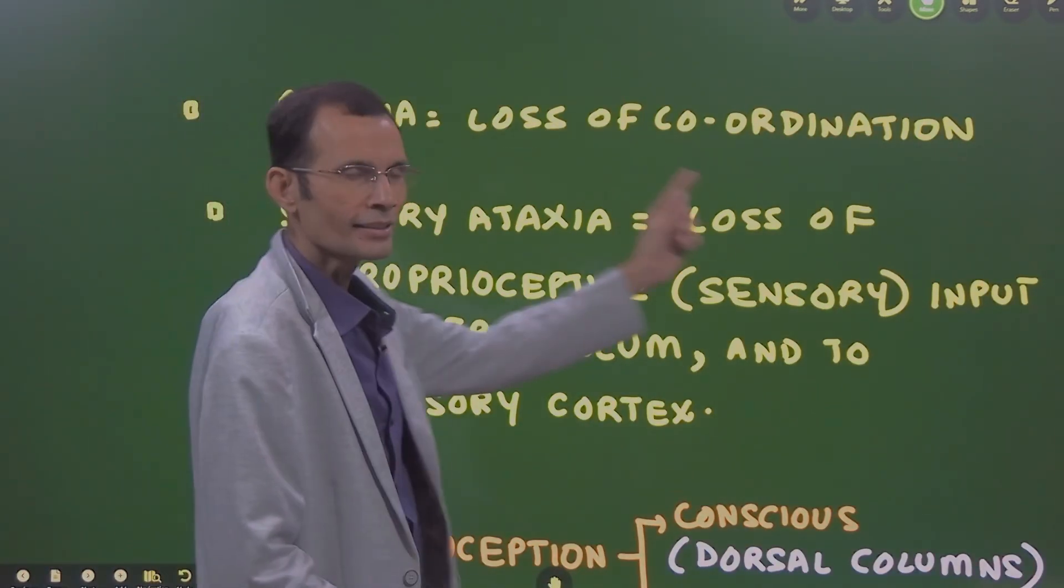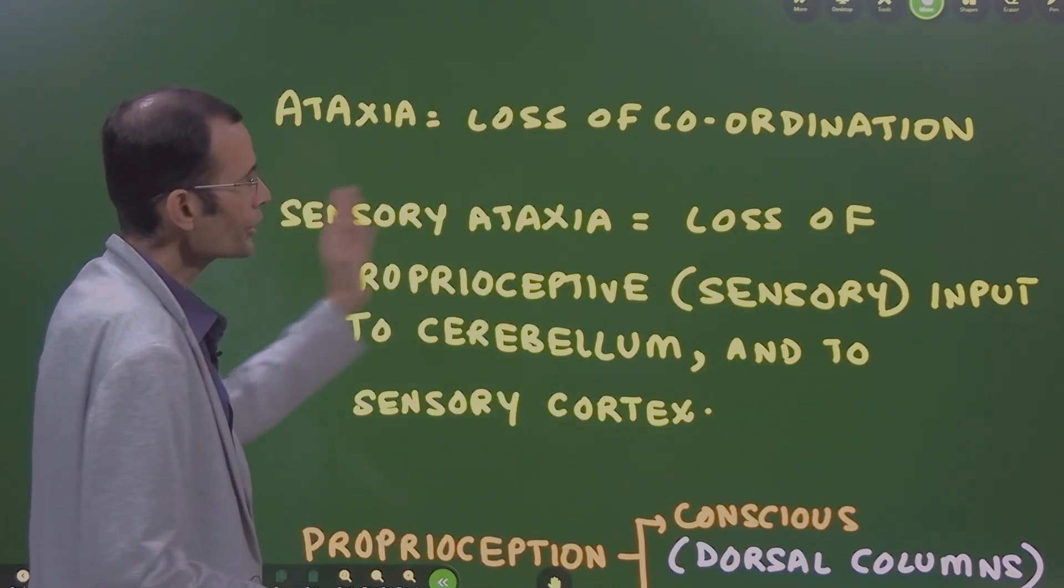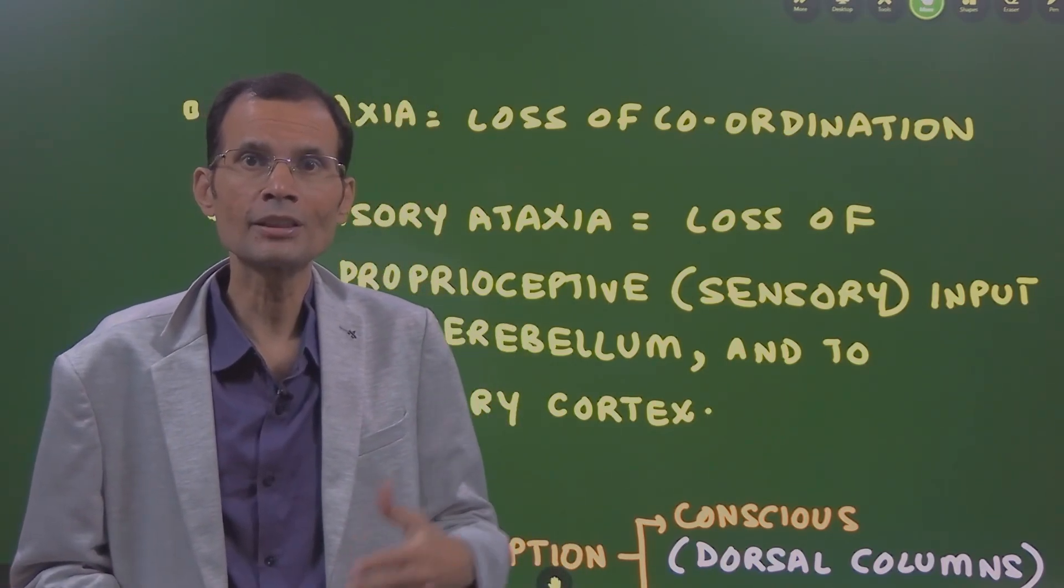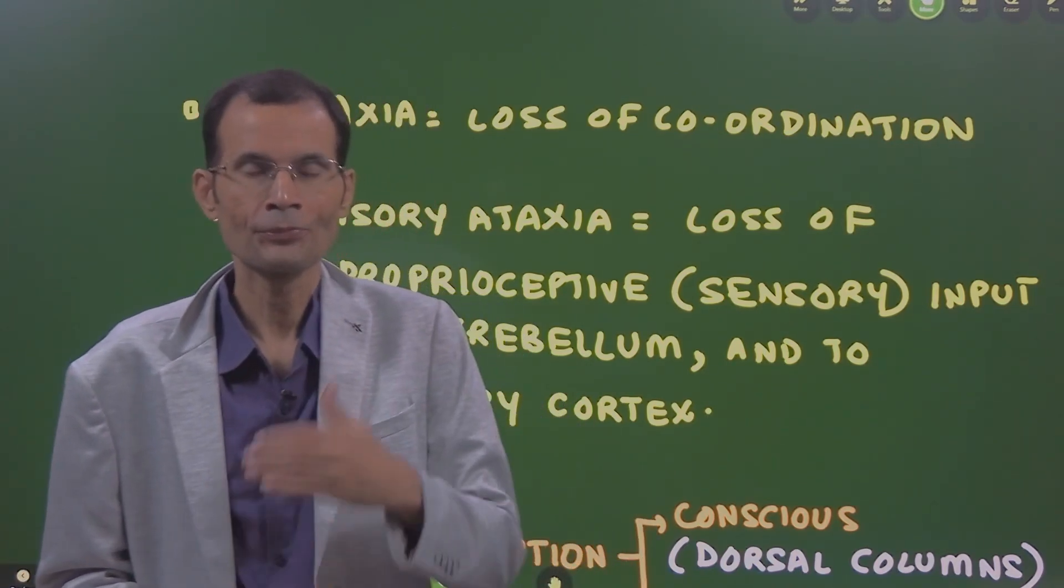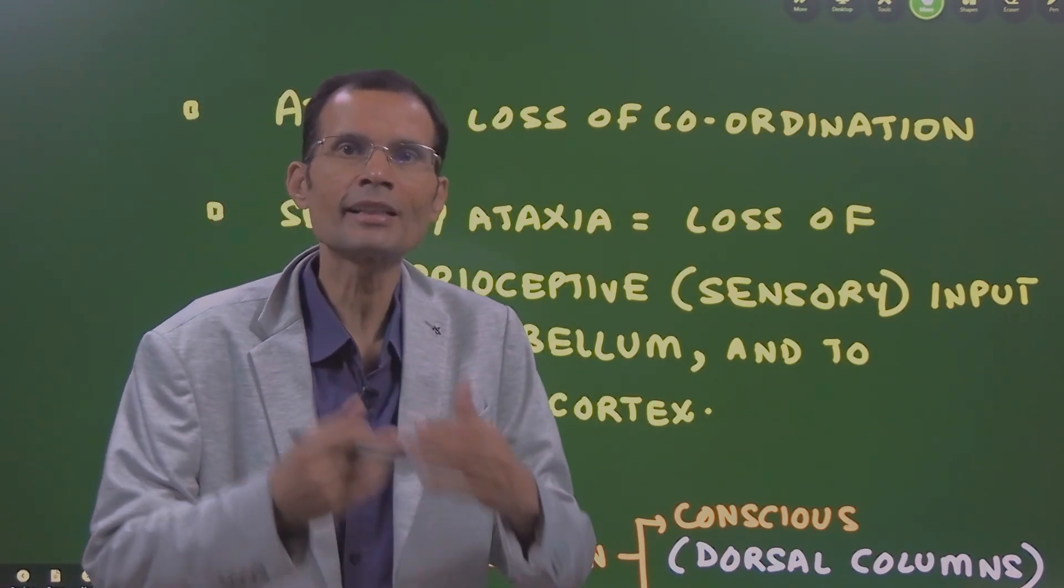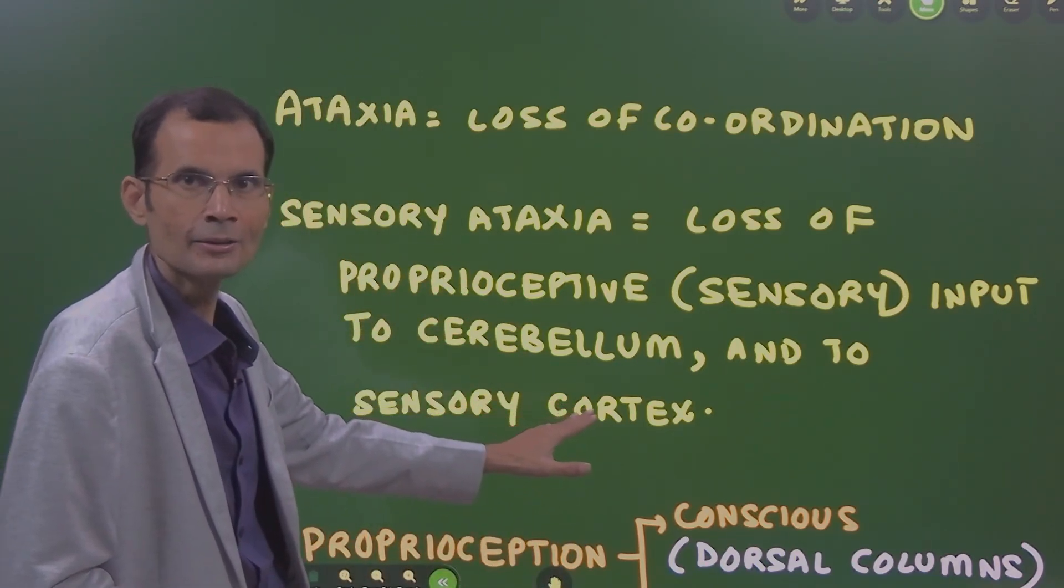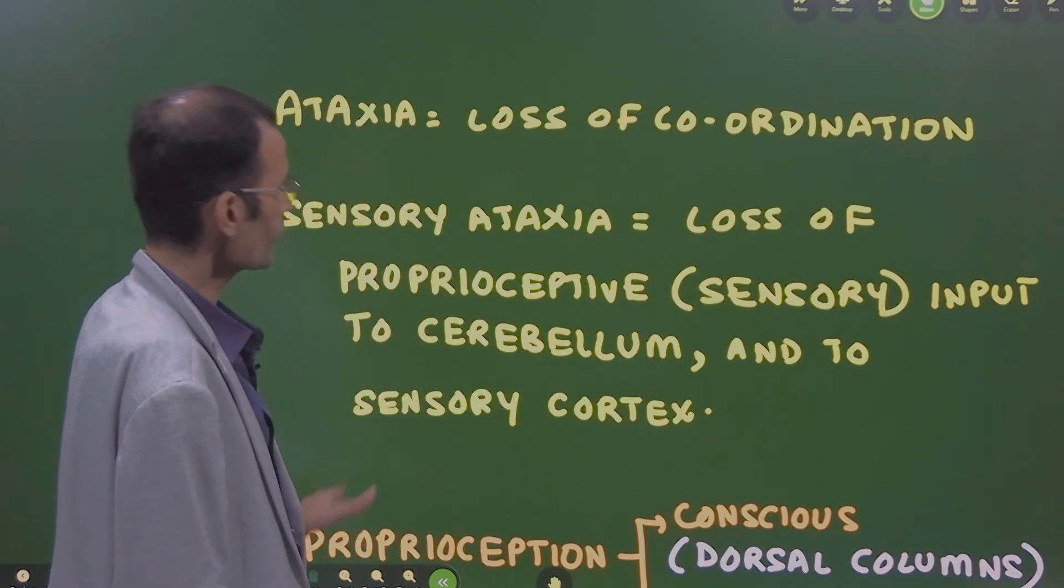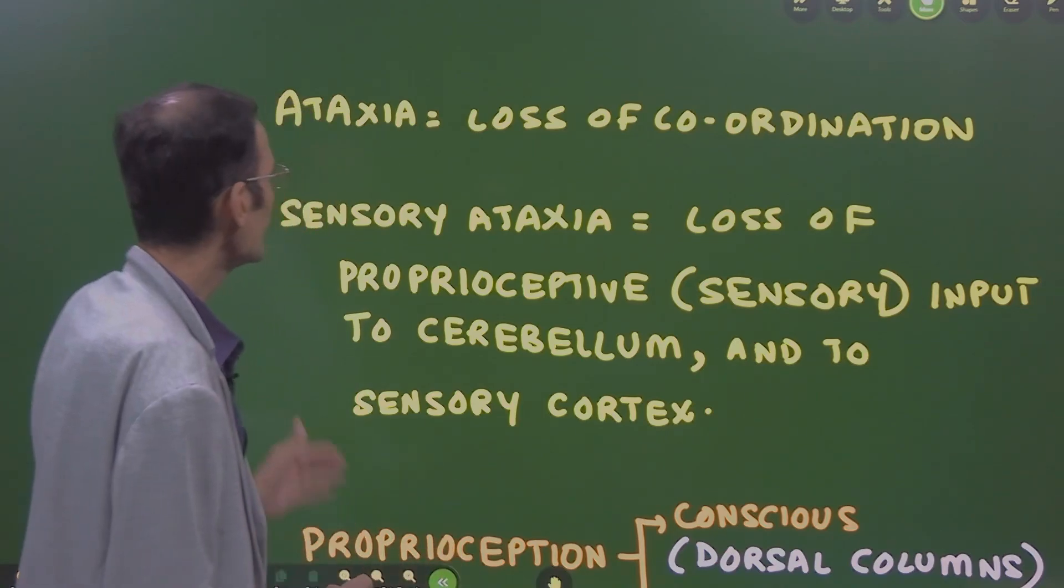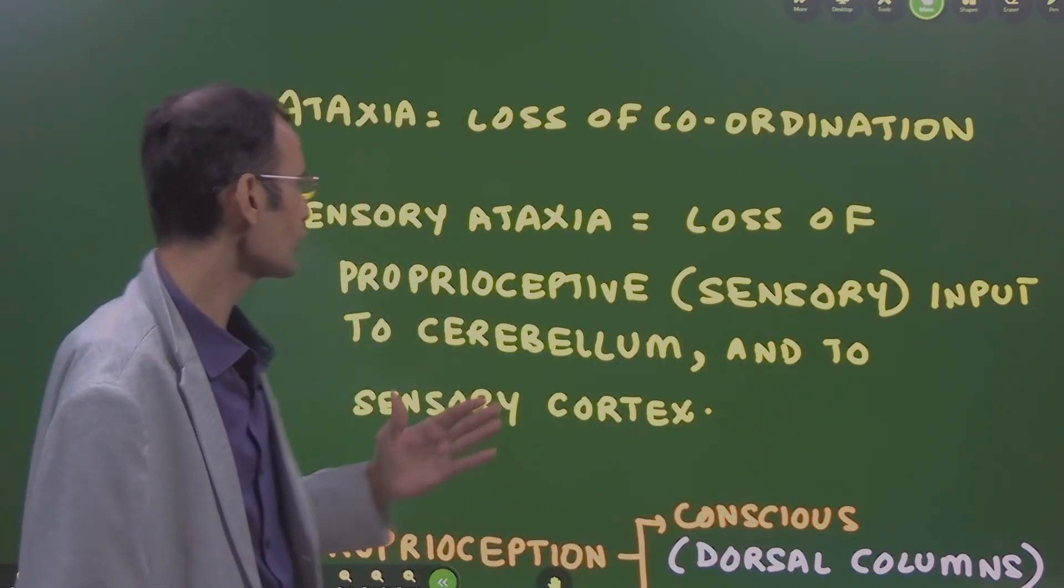So ataxia means loss of coordination. Coordination is the function of cerebellum and the cerebellum has to receive inputs from the muscles and that input is called as proprioceptive input which is a sensory input. And therefore, sensory ataxia means loss of proprioceptive input which is a sensory input coming from the muscles and going to the cerebellum and also to the sensory cortex.